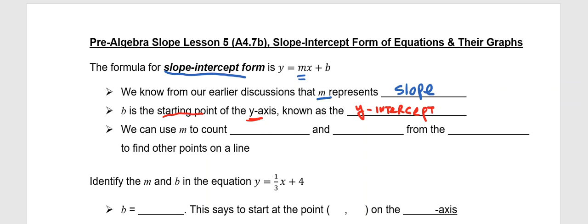So once we have that starting point, we can use our m value to count rise and run. So we know rise, we can count up or down. The run, we can count right or left.